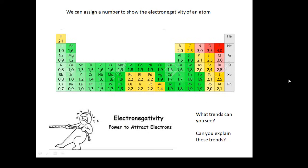And looking at this, you'll see that the biggest electronegativity is your fluorine. That is the most attractive to electrons in a bond. It only applies if you're actually in a bond. So looking at the periodic table here, what trends can you see? What trends in electronegativity can you see? And can you explain these trends?